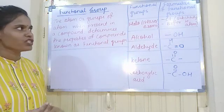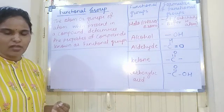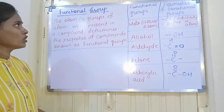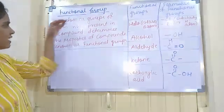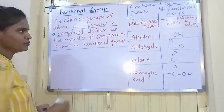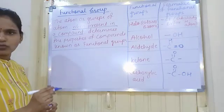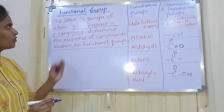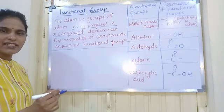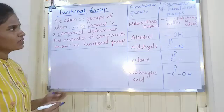These atoms which substitute hydrogen in hydrocarbons are known as hetero atoms. Now, what are functional groups? The atoms or group of atoms when present in a compound that determines the properties of that compound are known as functional groups. The atom or group of atoms when present in a compound determines the characteristic properties of the compound — that is a functional group.